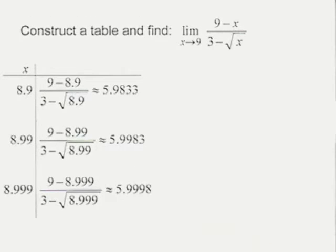And we continue to get closer and closer values to nine. So 8.999, plugging that in, we get approximately 5.9998. And so that's approaching nine from the left.